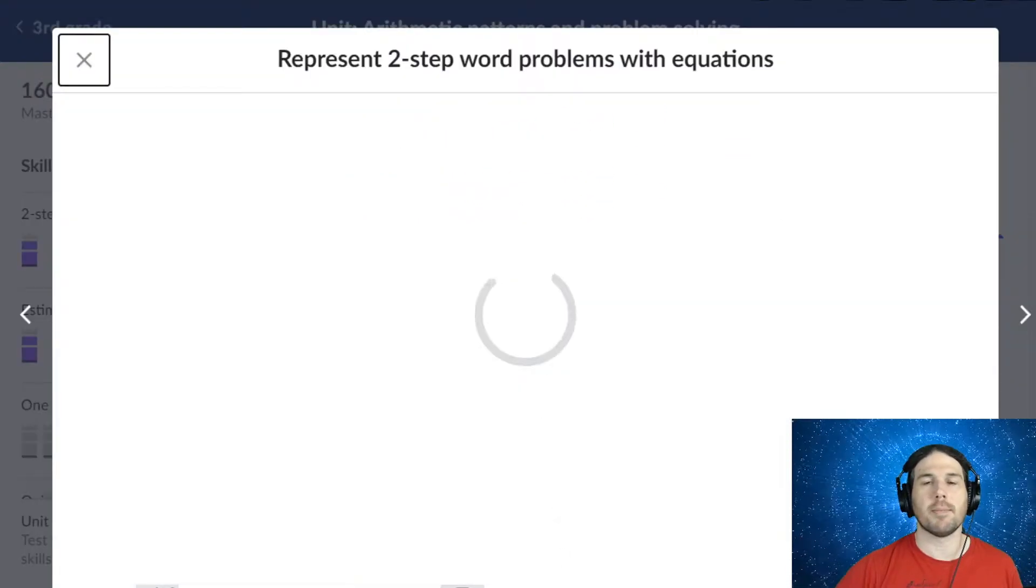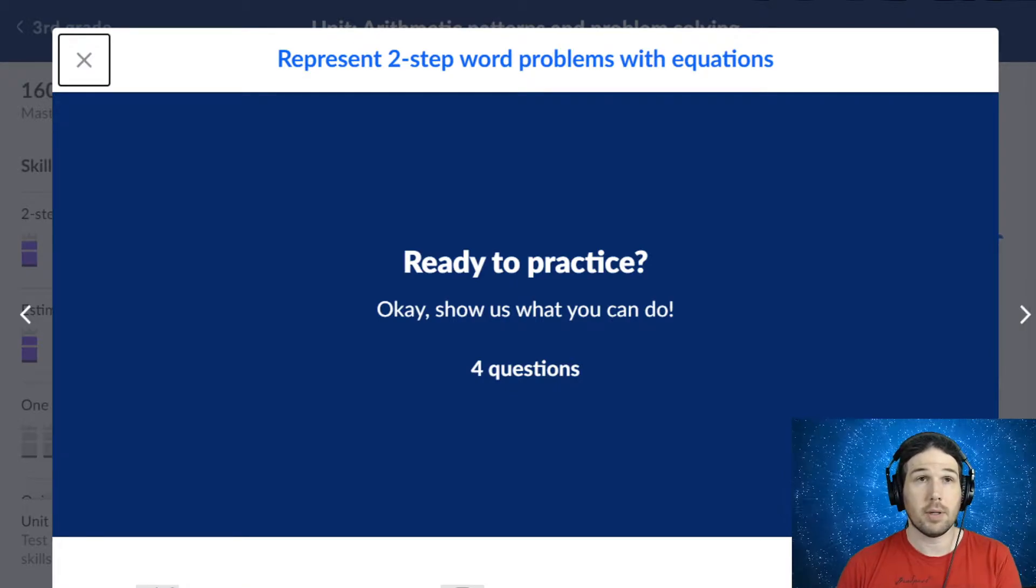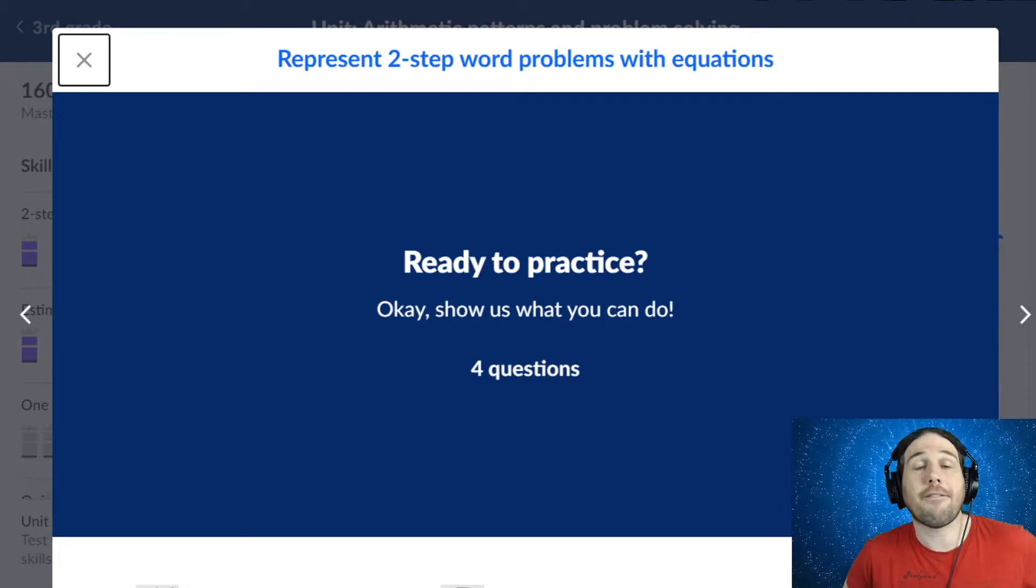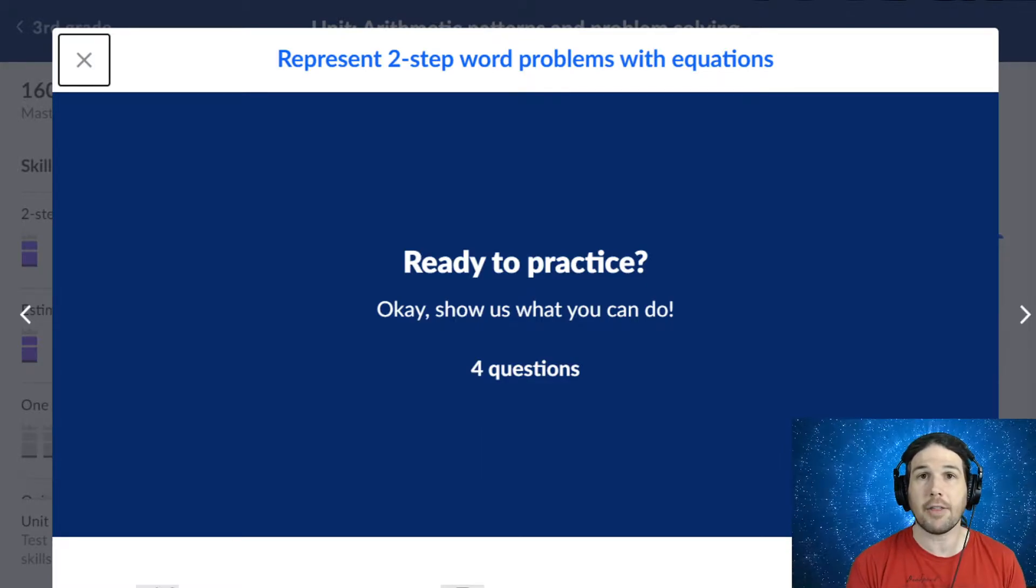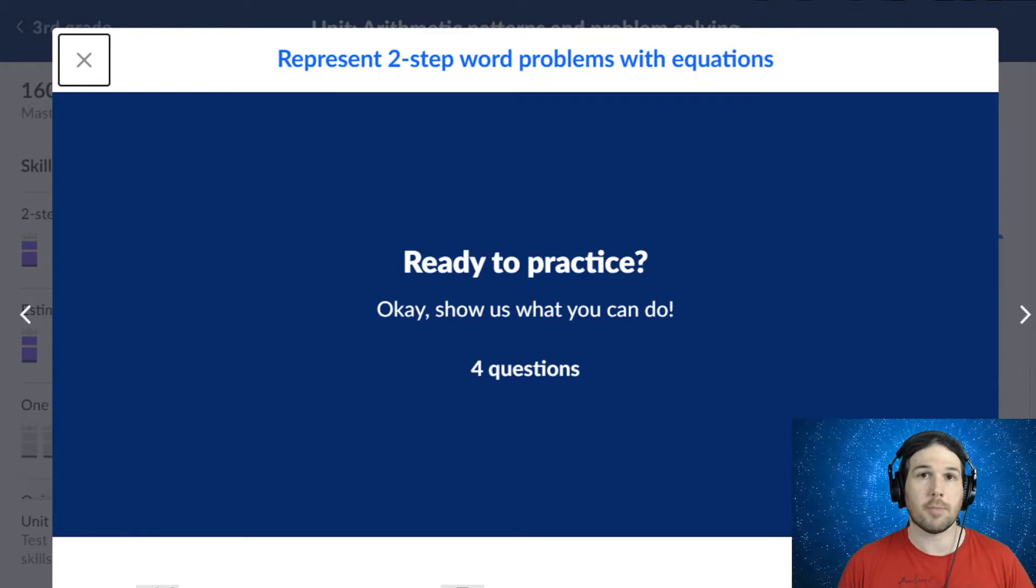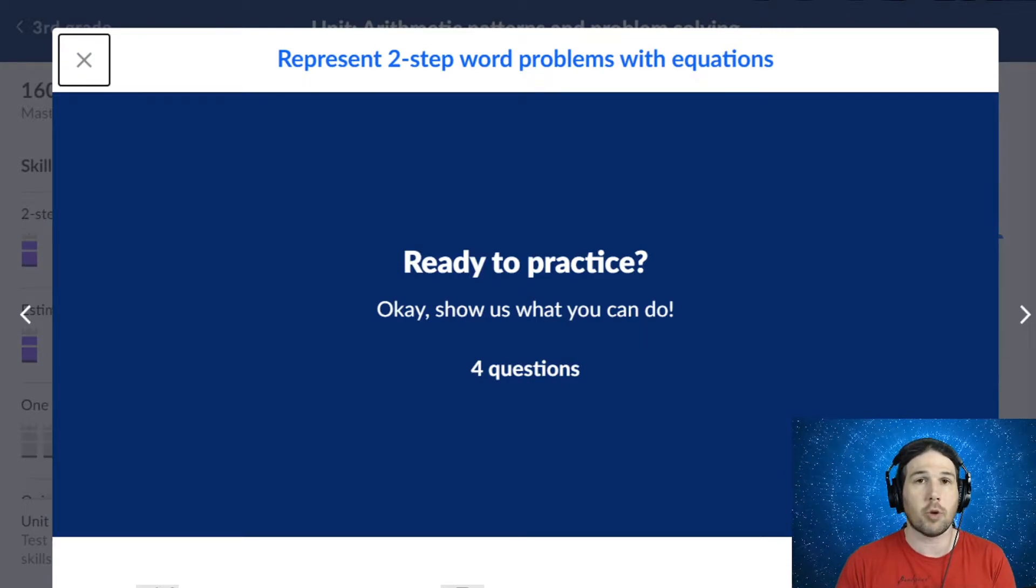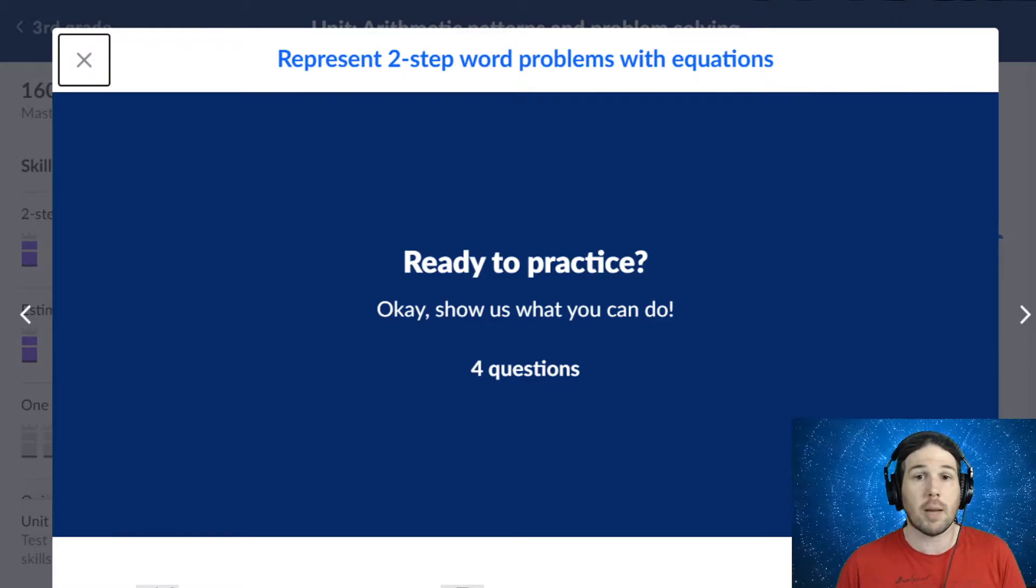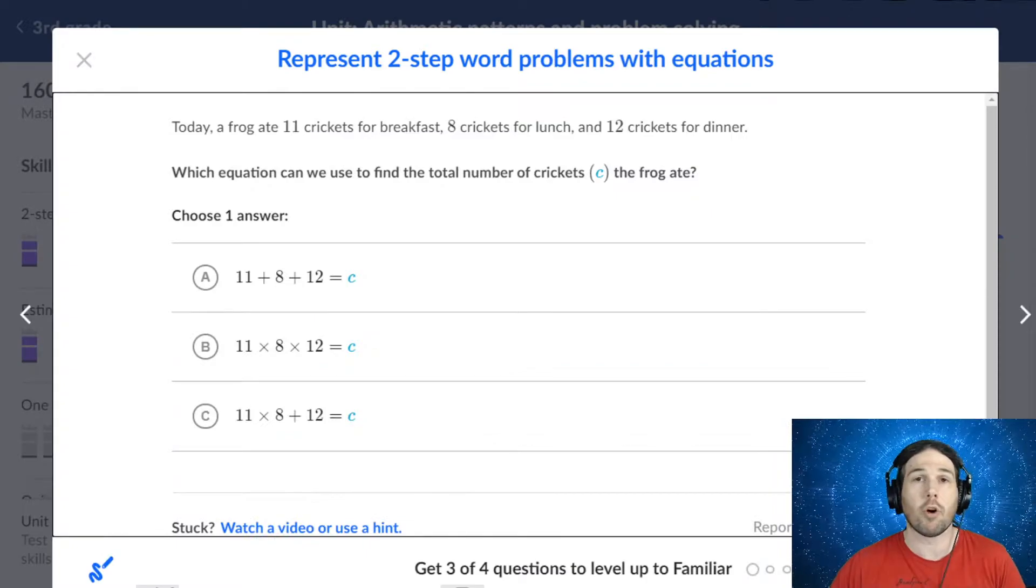Represent two-step word problems with equations. Again, we are learning how to write now. We have figured out how to do the multiplication, how to break it down, how to put it back together. We've got our times tables at this point. We're sort of assumed to know how to do all of this basic one-digit multiplication and how to break multiplication up into smaller pieces to make it easier. Now we're going to learn a little bit more about how to write.